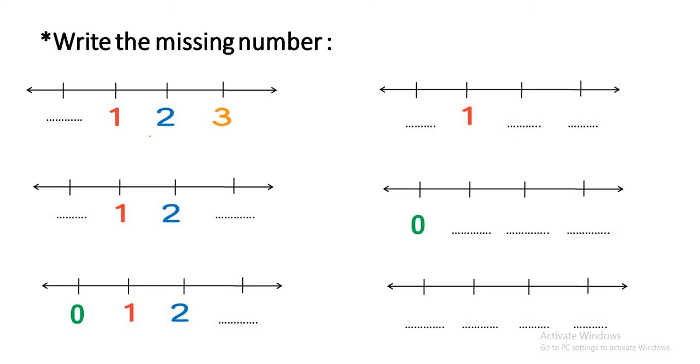Another question: Write the missing number. Do you remember this? It's number line. I said before 1, I started from 1, counted from 1, 2, 3, and so on. But when I study number 0, the number line starts from 0 and can stop at any number. It has no end.